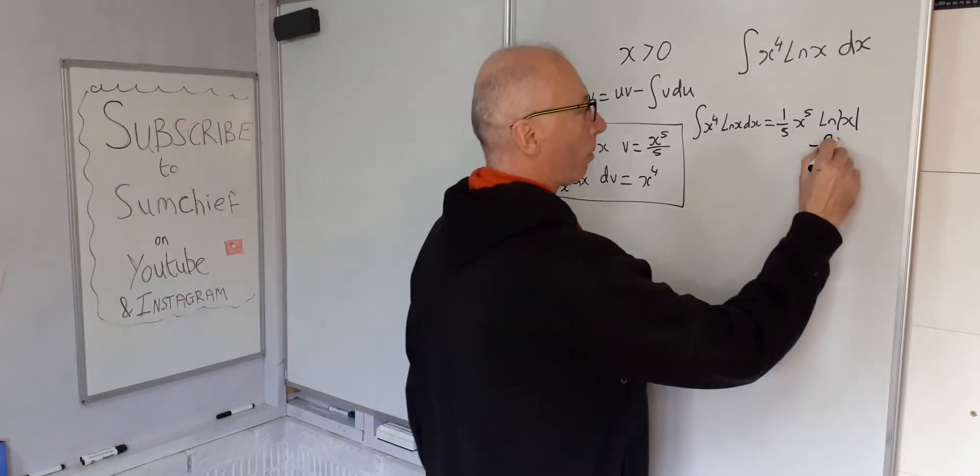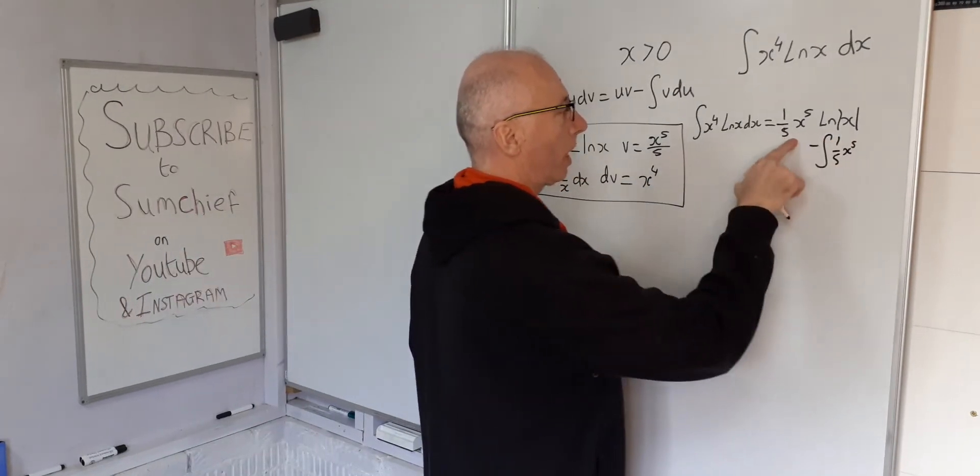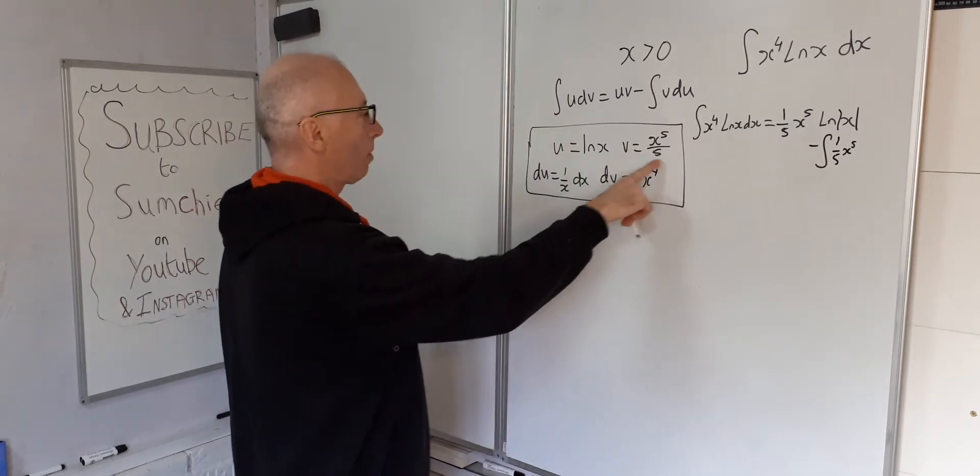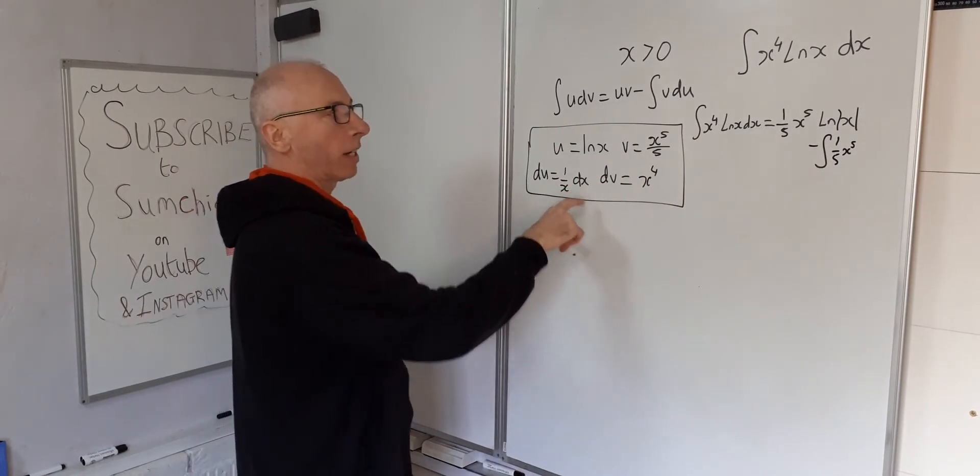So I'm going to write this as 1 over 5 x to the 5, as we did before. That's the same thing, times 1 over x dx.